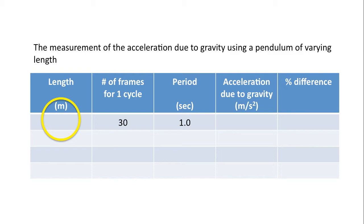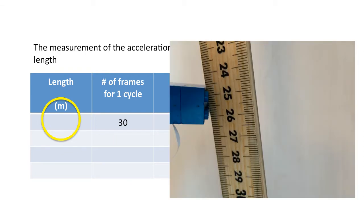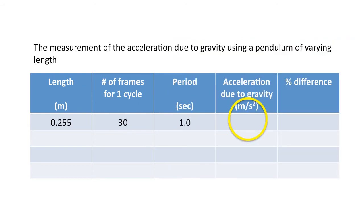Now the length. So there is an image, and we're measuring to the middle of the pendulum bob. In this case, the middle of the piece of Lego. And so our length seems to be around 0.255 meters, I think, is a pretty good estimate of that measurement. And now, using the formula that I gave you previously in the video, you can determine the acceleration due to gravity.